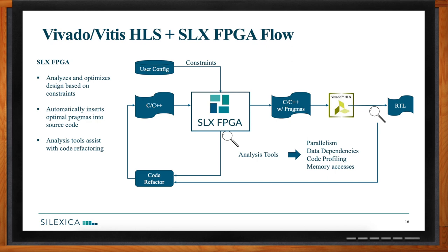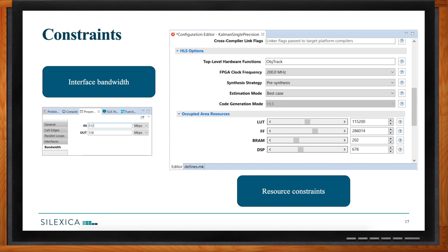Constraints are a key input into the SLX FPGA tool alongside your C and C++ code and test bench. There are two key areas: first, the bandwidth of the data coming in, handled by interface bandwidth constraints; and second, resource constraints — lookup tables, flip-flops, block RAMs, or DSP slices, each configurable separately. These constraints guide the tool in determining how much to parallelize in order to maximize your performance per area. This constraint-based approach saves significant time during design space exploration.